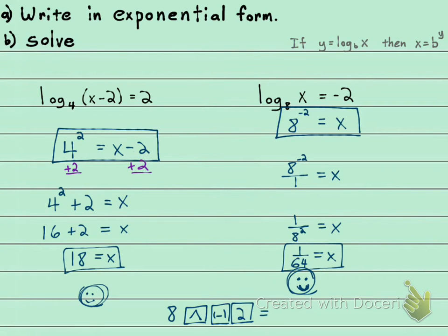When you do that, it's going to give you a decimal. Let me see what decimal it gives you. 8 to the power of negative 2 equals. It's going to give you a decimal of 0.015625.